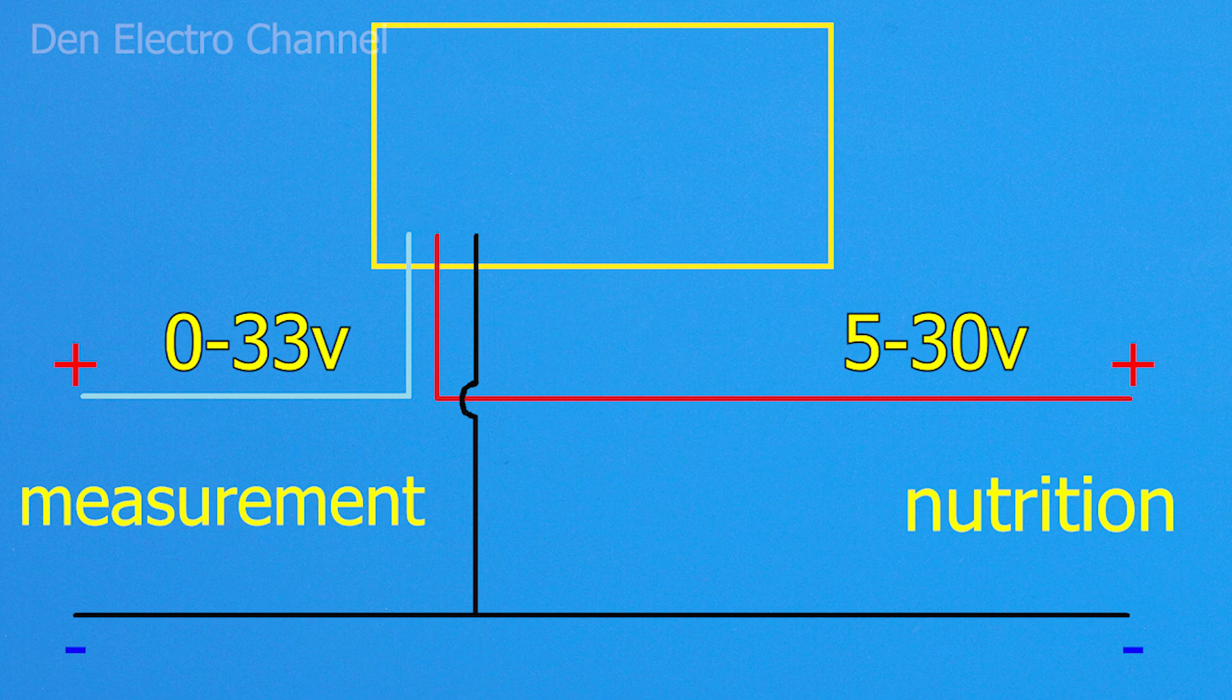It is better, of course, to apply a voltage of about 10 volts. Since at low voltage, the LEDs do not shine at maximum brightness. And at high voltage, the voltmeter starts to heat up.